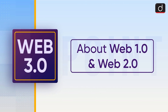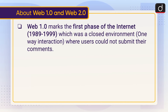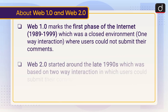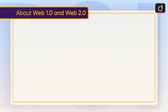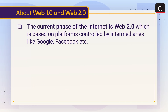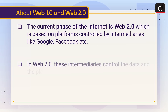Now let's discuss Web 1.0 and Web 2.0. Web 1.0 marks the first phase of the internet from 1989 to 1999, which was a closed environment — a one-way interaction where users could not submit comments, post, or create content like on Facebook and YouTube. The current phase of the internet is Web 2.0, which is based on platforms controlled by intermediaries like Google and Facebook. In Web 2.0, these intermediaries control the data and the platform.